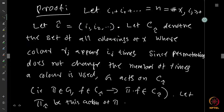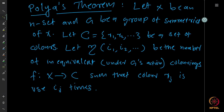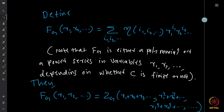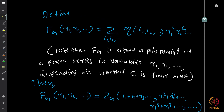In summary, what we proved is that the number of inequivalent colorings where color rᵢ occurs iᵢ times — given by the tuple (i₁, i₂, ...) — is obtained by looking at the cycle index polynomial Z_G of the group G, and replacing each variable zᵢ by Σⱼ rⱼⁱ. This generating function encodes all the inequivalent coloring counts. That is what Pólya's theorem is about.